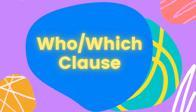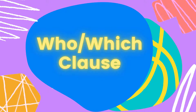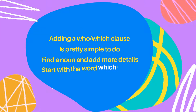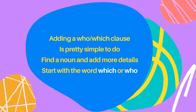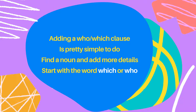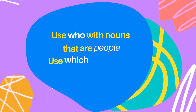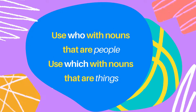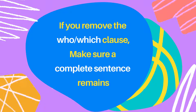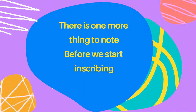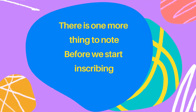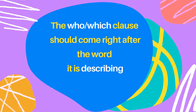Who/which clause! Adding a who/which clause is pretty simple to do. Find a noun and add more details. Start with the word 'which' or 'who.' Use 'who' with nouns that are people; use 'which' with nouns that are things. If you remove the who/which clause, make sure a complete sentence remains. There is one more thing to note before we start: the who/which clause should come right after the word it is describing.